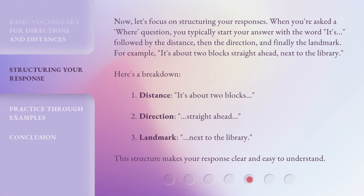Now let's focus on structuring your responses. When you're asked a 'where' question, you typically start your answer with the word 'it's,' followed by the distance, then the direction, and finally the landmark. For example: 'It's about two blocks straight ahead, next to the library.' Here's a breakdown: one — distance: 'it's about two blocks'; two — direction: 'straight ahead'; three — landmark: 'next to the library.' This structure makes your response clear and easy to understand.